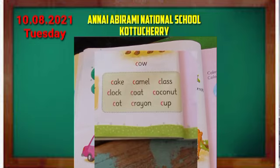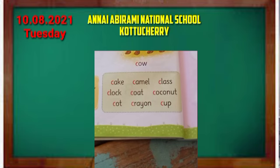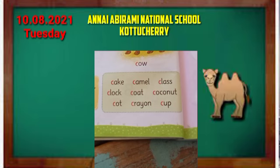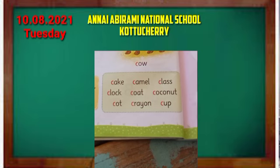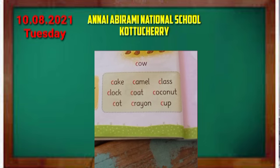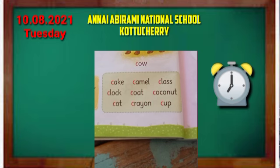Look at the bottom of the page. So some C words are there. So look at this box. So first word is cake. C-A-K-E. Cake. Camel. C-A-M-E-L. Camel. Class. C-L-A-S-S. Class. Clock. C-L-O-C-K. Clock.